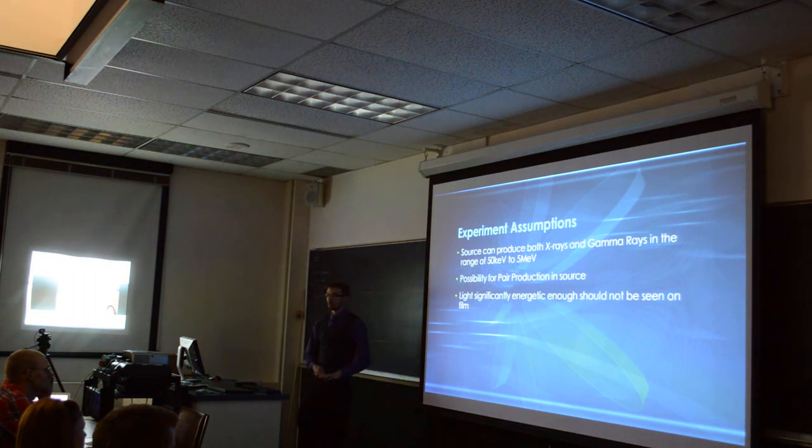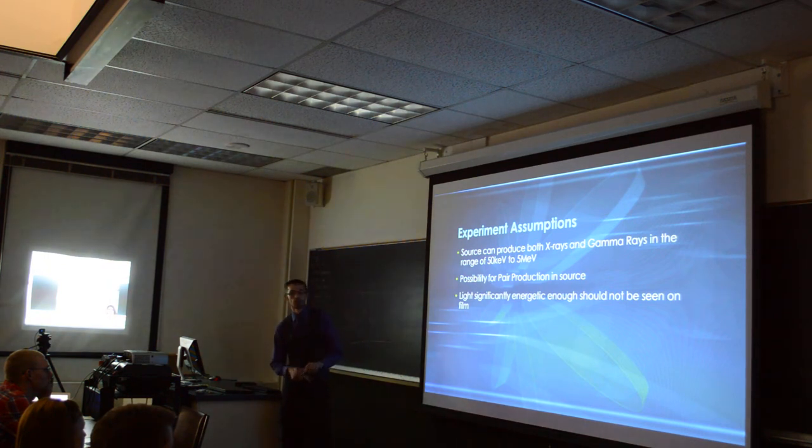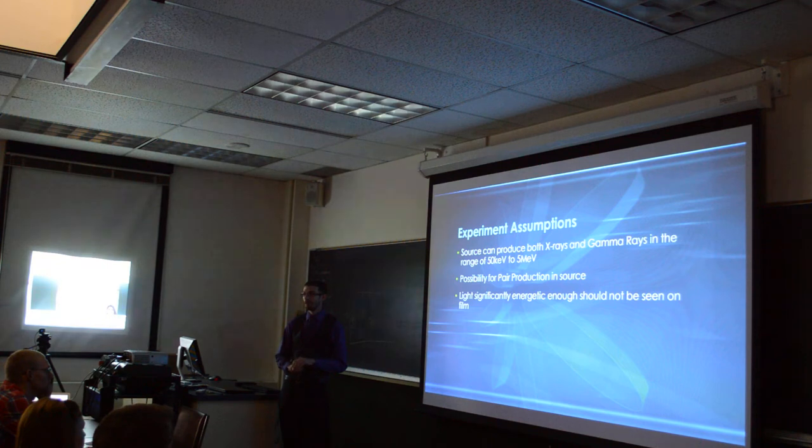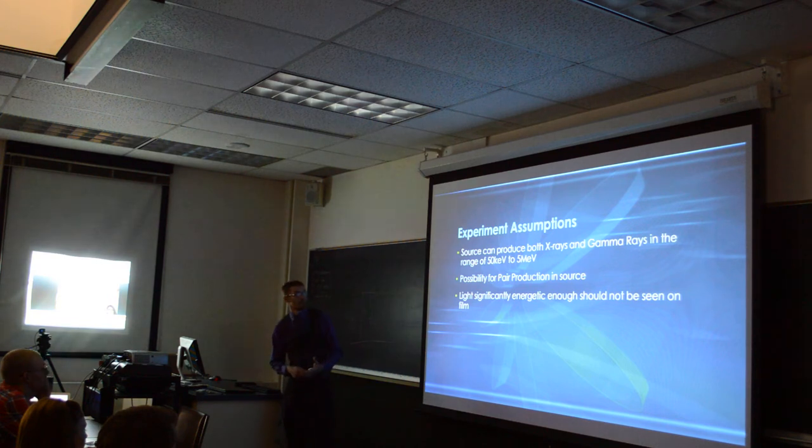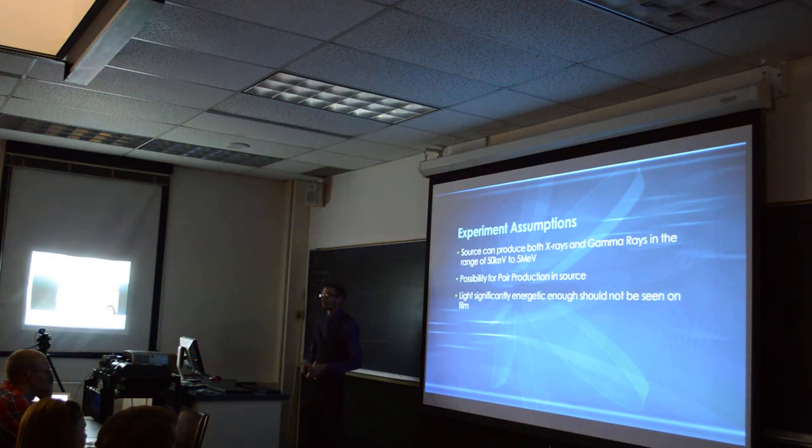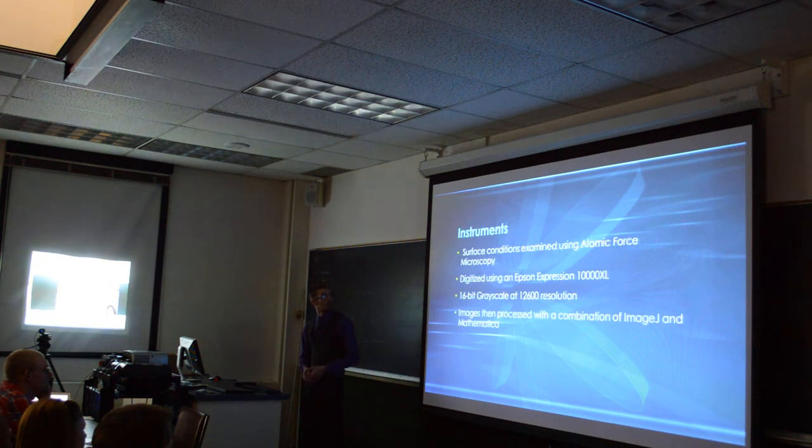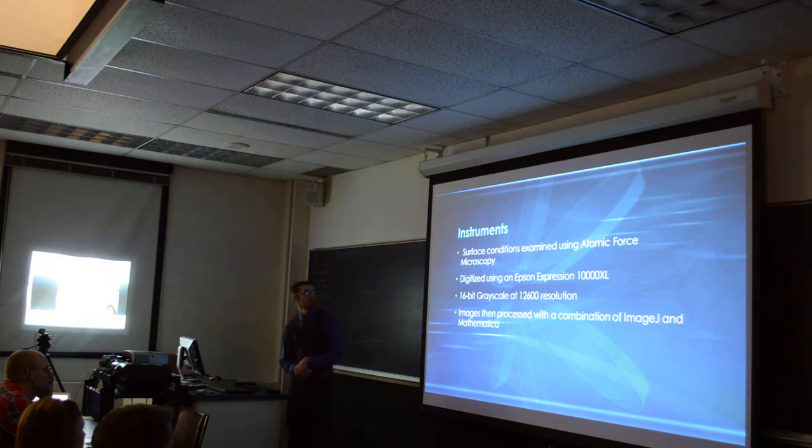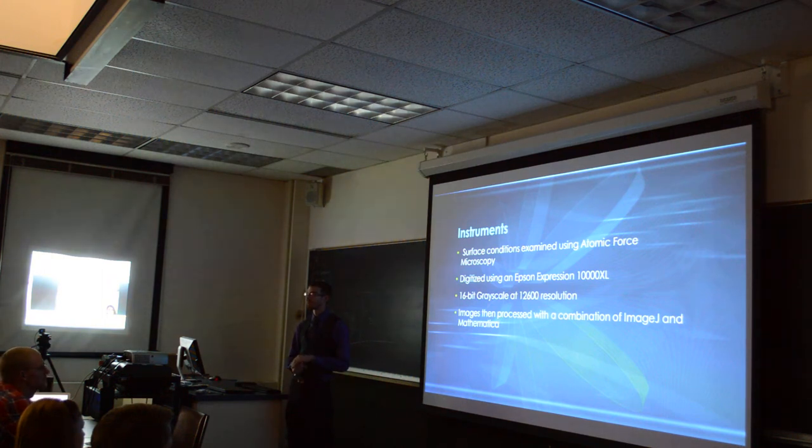We made a couple of assumptions when we first went into this. That the source could produce both X-rays and gamma rays between 50 keV and 5 MeV. There is possible pair production in the source because we're essentially firing an electron gun into a copper plate. So it was essentially making a giant X-ray source. The light that is significantly energetic could pass directly through film, so some of the very high energetic light rays could just not be seen at all.